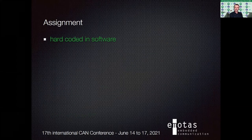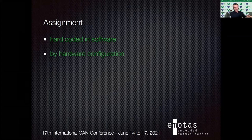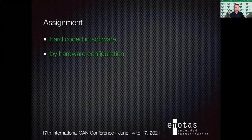The question is how to get a device its own Node-ID. The simple approach is to hard-code it in software — that's very easy. But the problem is if you have multiple identical devices in the network, they would all have the same Node-ID if they're running the same software, which is not the desired behavior. Another possibility would be some kind of hardware configuration — it could be a DIP switch, a rotary switch, coded plugs, or something like that.